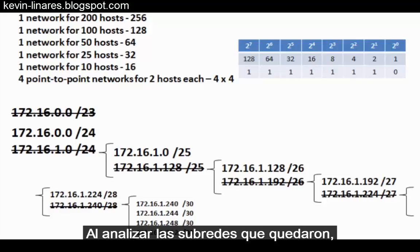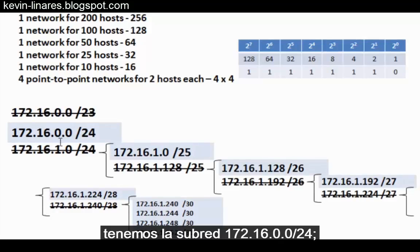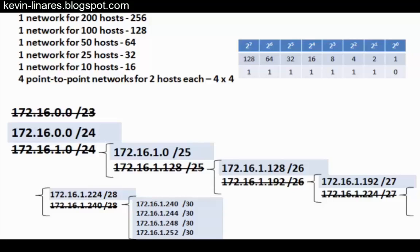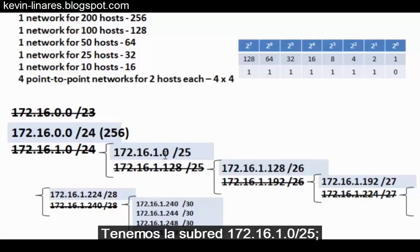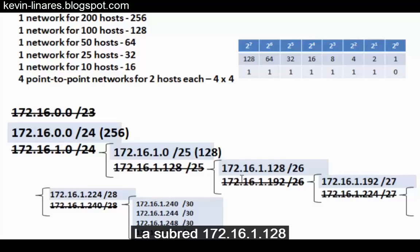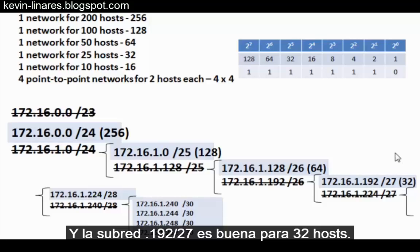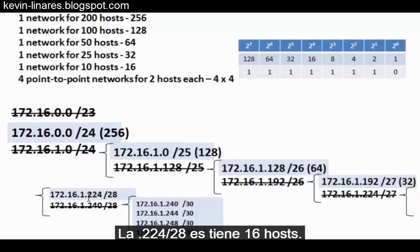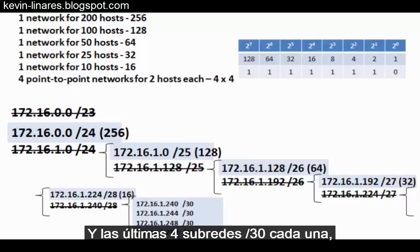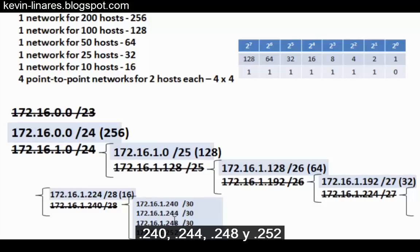Looking at the subnets that have been created: the 172.16.0.0/24 subnet is good for 256 hosts. The 172.16.1.0/25 subnet is good for 128 hosts. The 172.16.1.128/26 subnet is good for 64 hosts. The 172.16.1.192/27 subnet is good for 32 hosts. The 172.16.1.224/28 is a 16-host subnet. And the last four subnets — /30 each — at 240, 244, 248, and 252 are good for four hosts each.